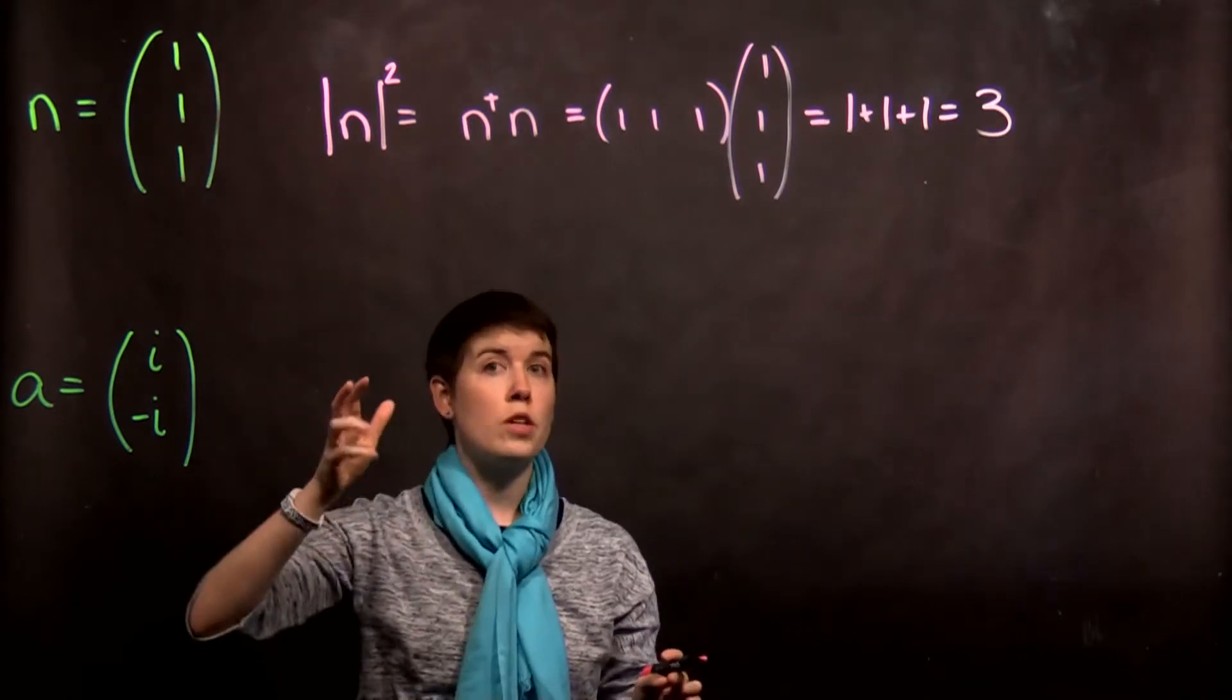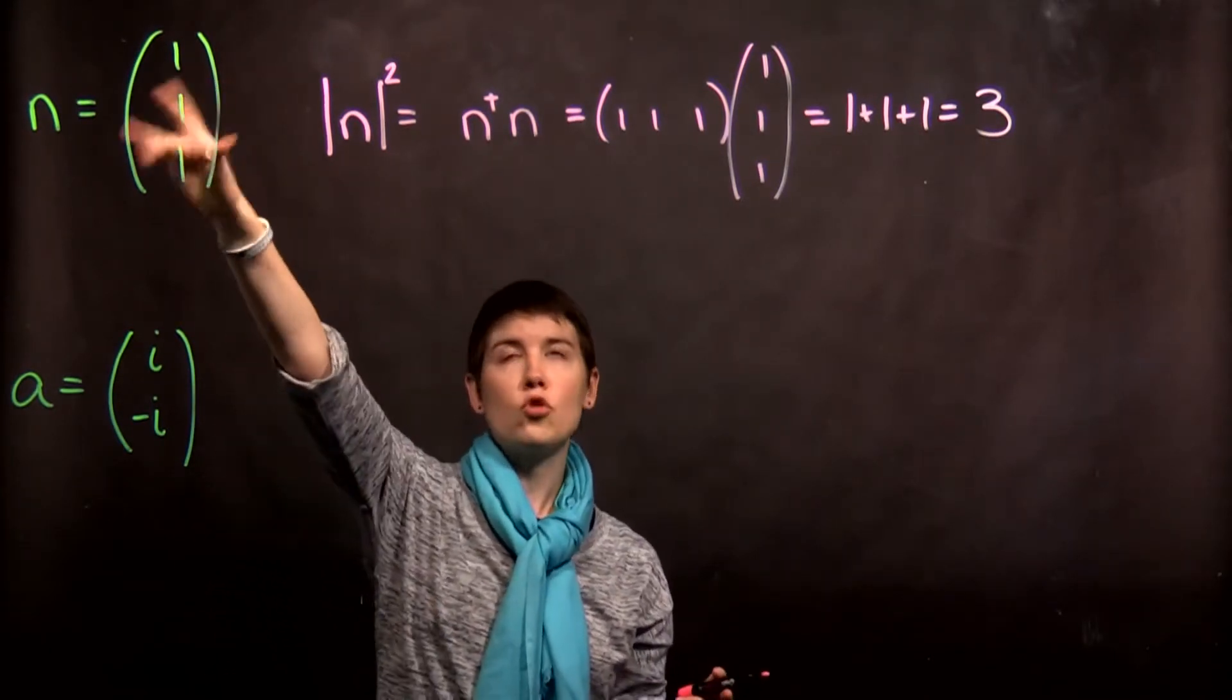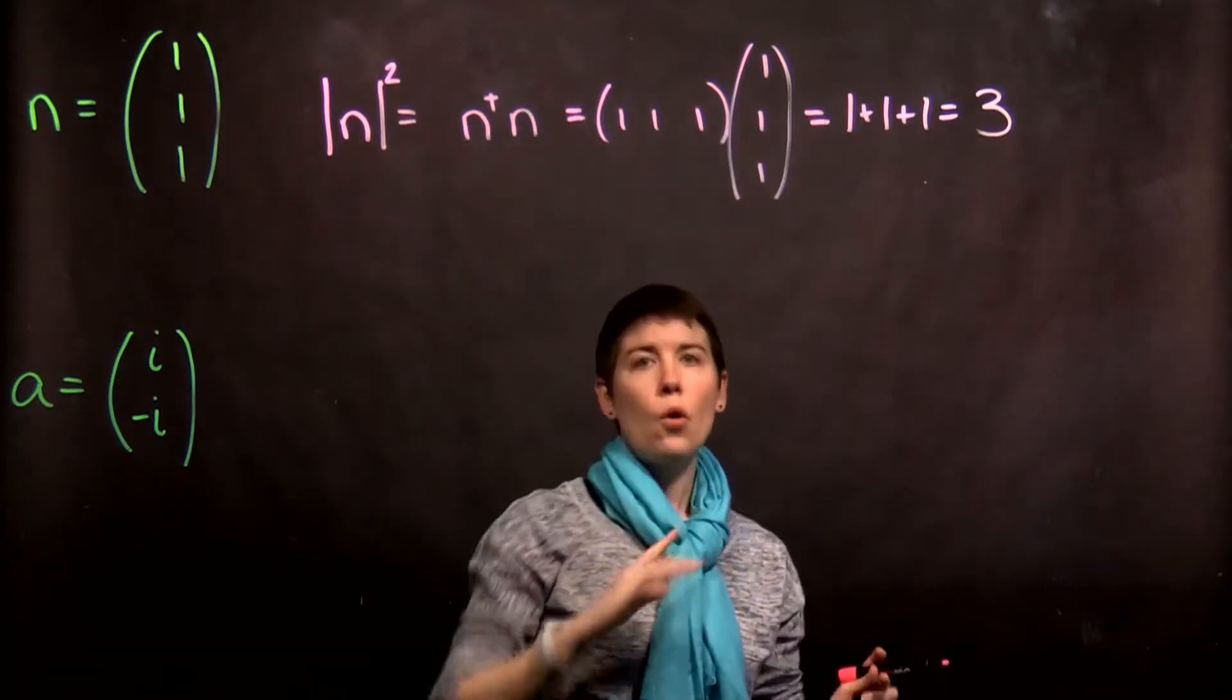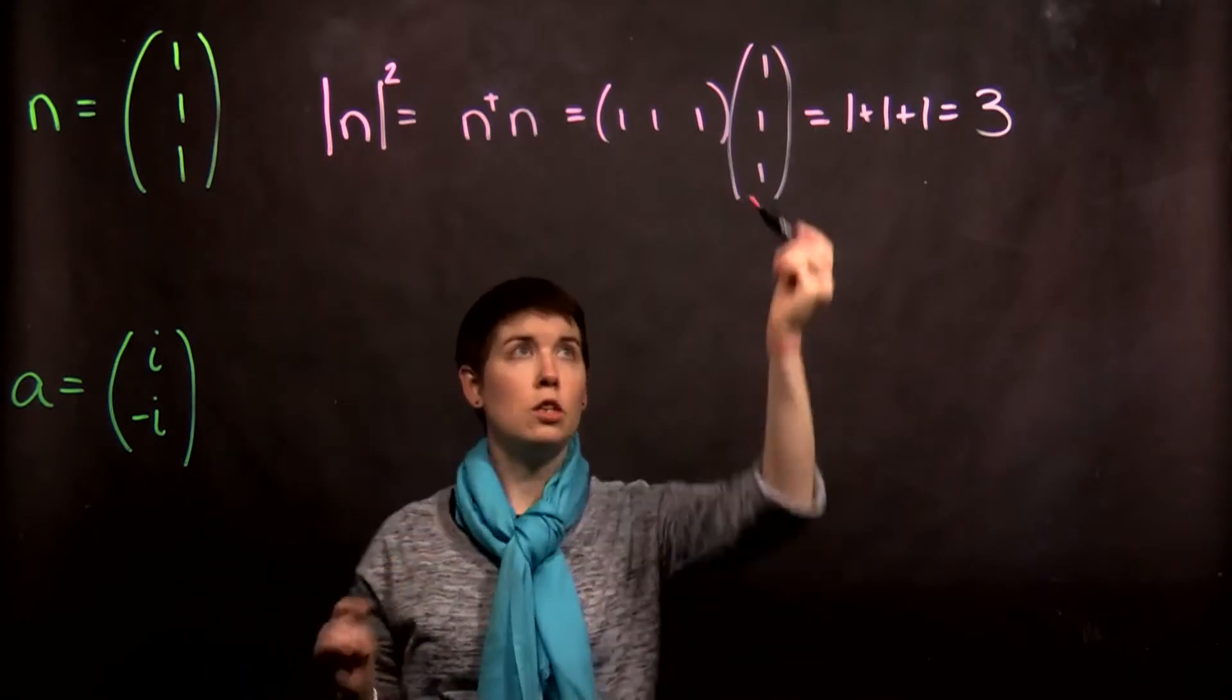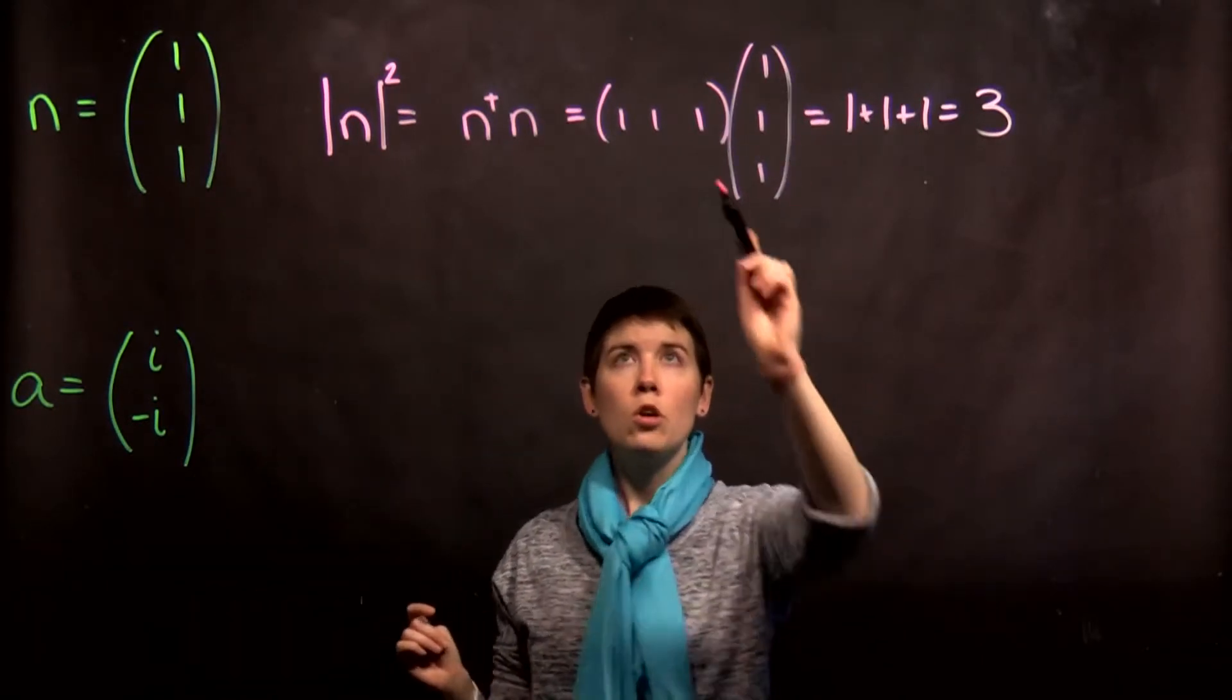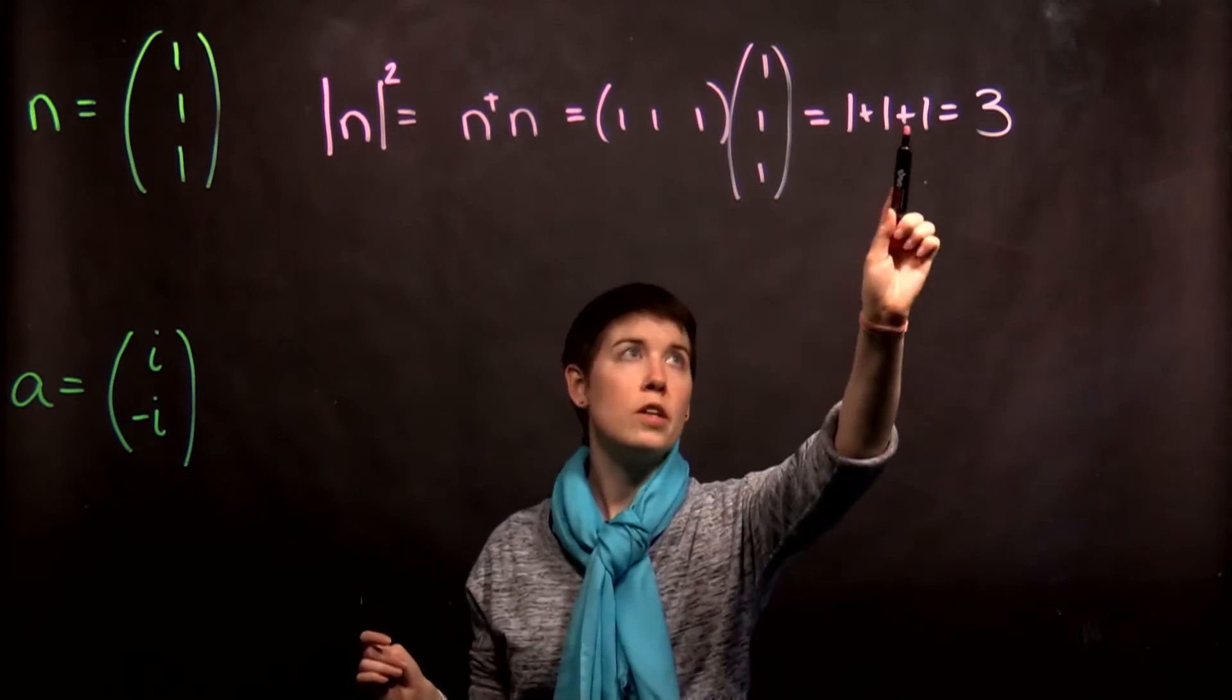In this case, each of these entries is real, so the complex conjugate we don't really need to worry about here. We're just transposing this. And so, we get one, one, one in a row, multiplied by our original vector one, one, one in a column. So, one times one is one, one times one is one, one times one is one, so three.